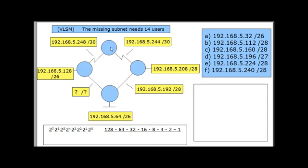In between two pairs of routers are WAN links — serial WAN links evidenced by this lightning bolt symbol — so these are point-to-point links. There are two /30 subnets for these two point-to-point links. Coming off one router's Ethernet interface we've got a /26 subnet, off another router a /28 subnet, and in between two other routers there's another Ethernet network with a /28 subnet.